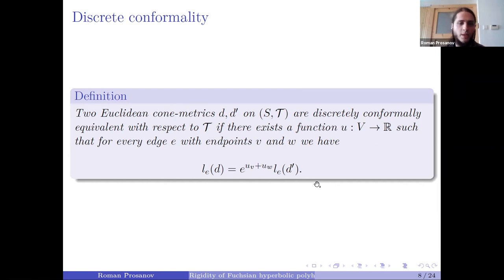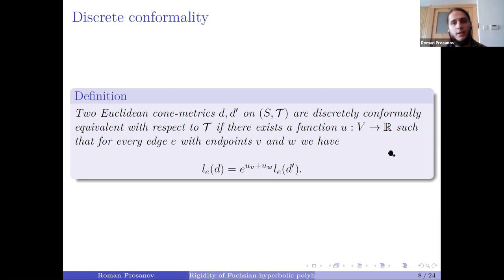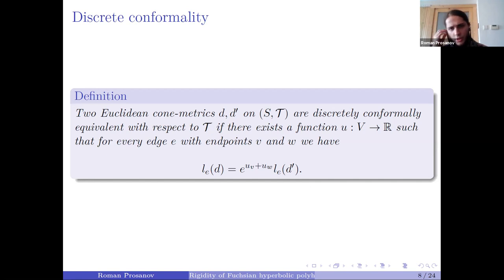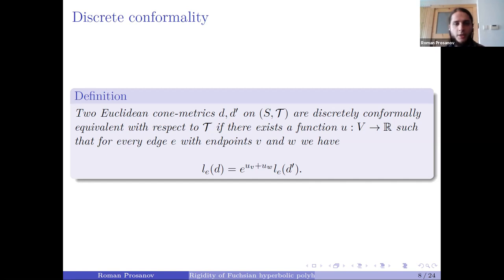Here I use exponentials because it is a conventional way to write it and easier to operate with. This definition, in the context of discrete conformality, was first proposed by Luo, although this definition appeared much earlier in a somewhat different setting.